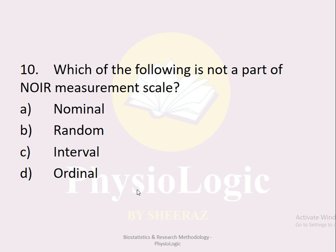MCQ number ten: Which of the following is not a part of the NOIR measurement scale? Option a nominal, option b random, option c interval, option d ordinal. The correct option is option b, random. In the NOIR measurement scale the four scales are nominal, ordinal, interval, and ratio. Random is not a measurement scale.